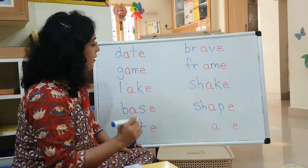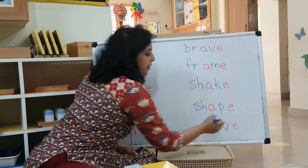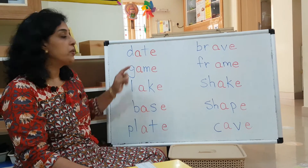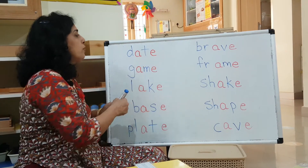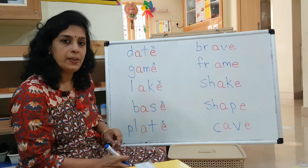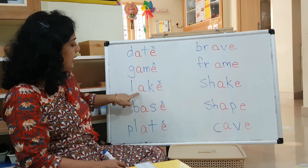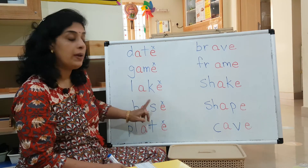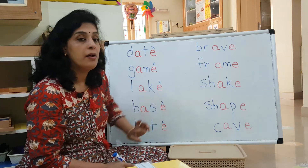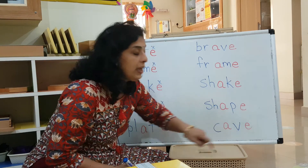One small word: C-A-VE — 'cave'. The bear lives in a cave, isn't it? So now it is easier for you to read: D-ATE — date, G-AME — game, L-AKE — lake, B-ASE — base, plate, brave, frame, shake, shape, cave. Notice that everywhere in this rule, the sound of 'e' is silent.